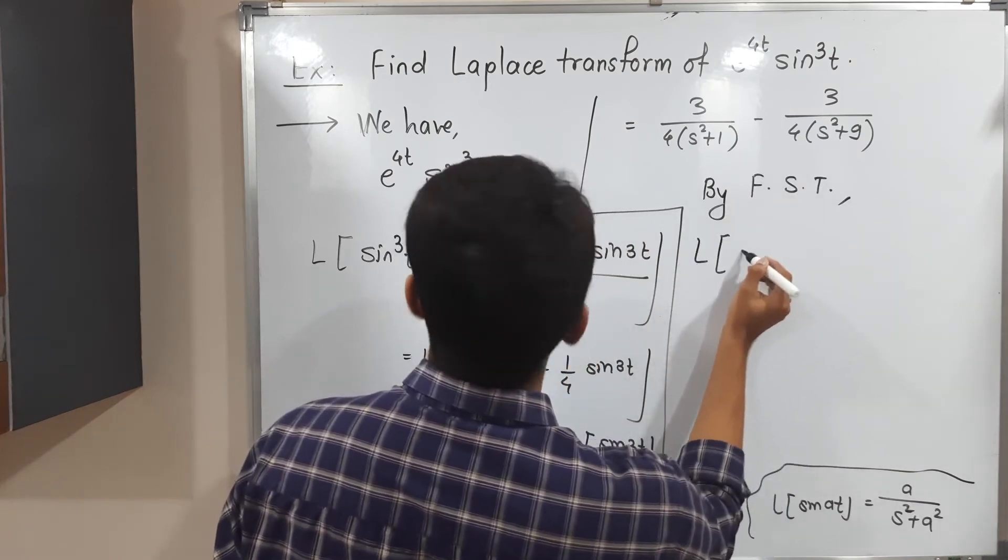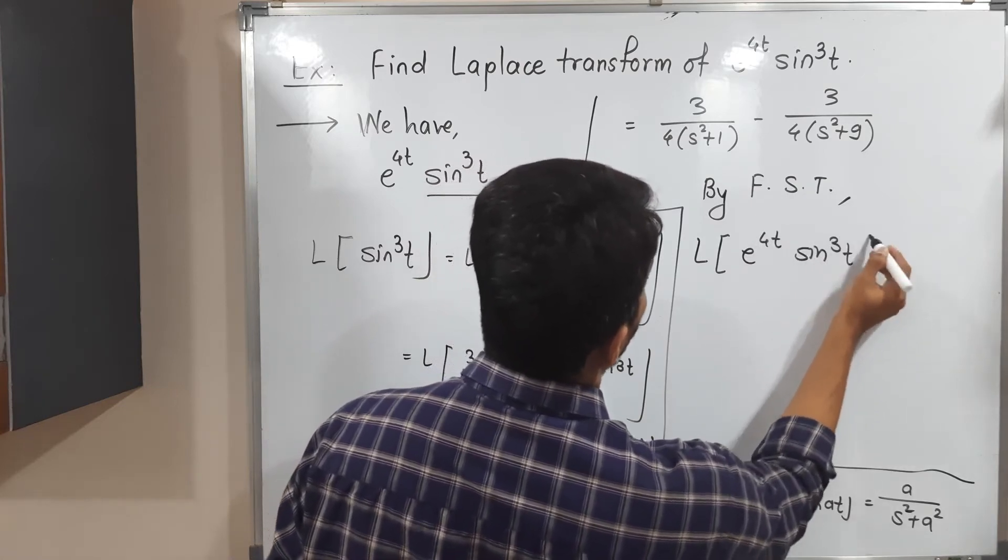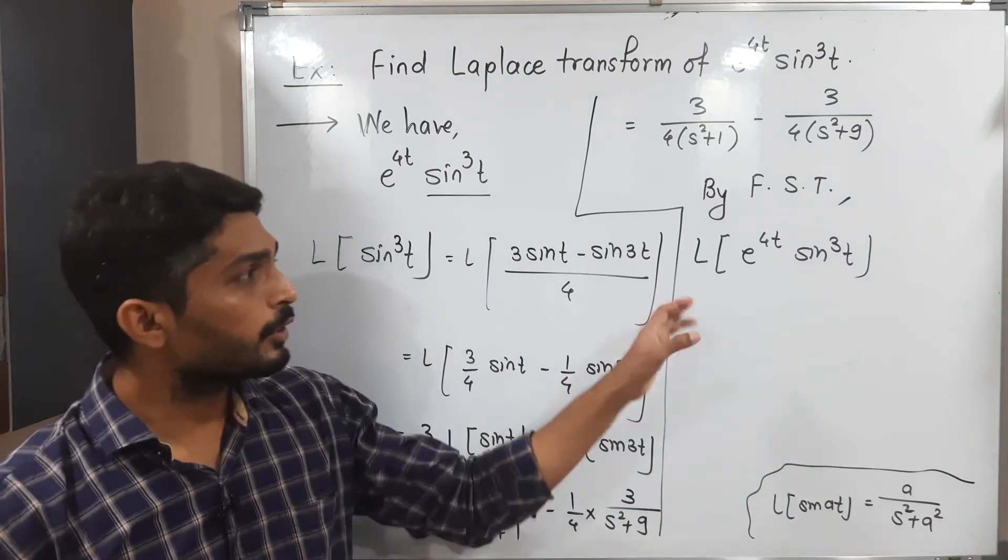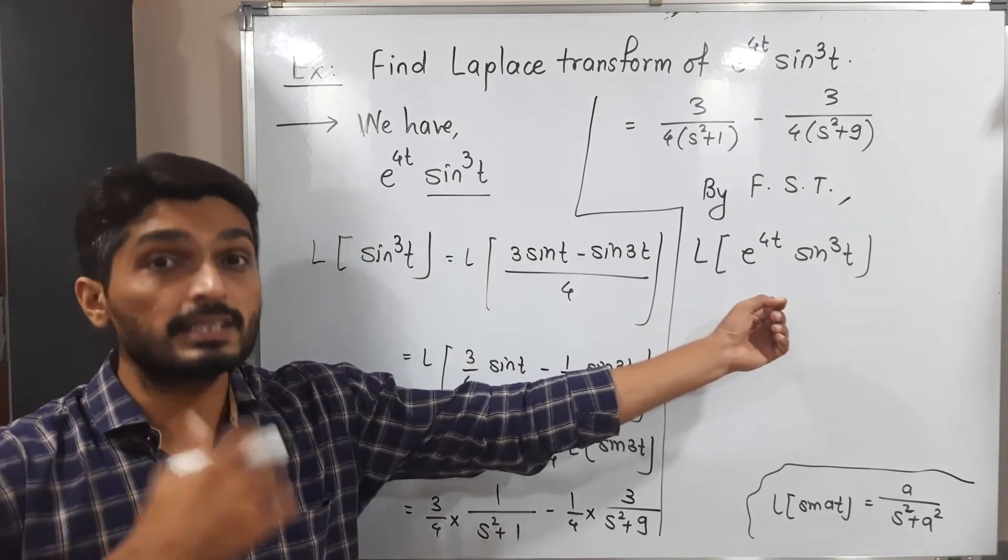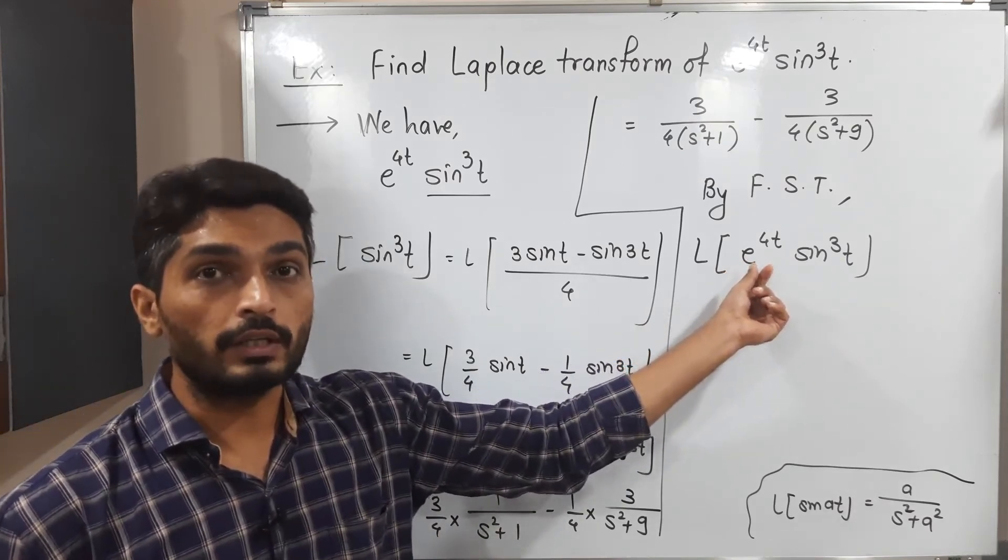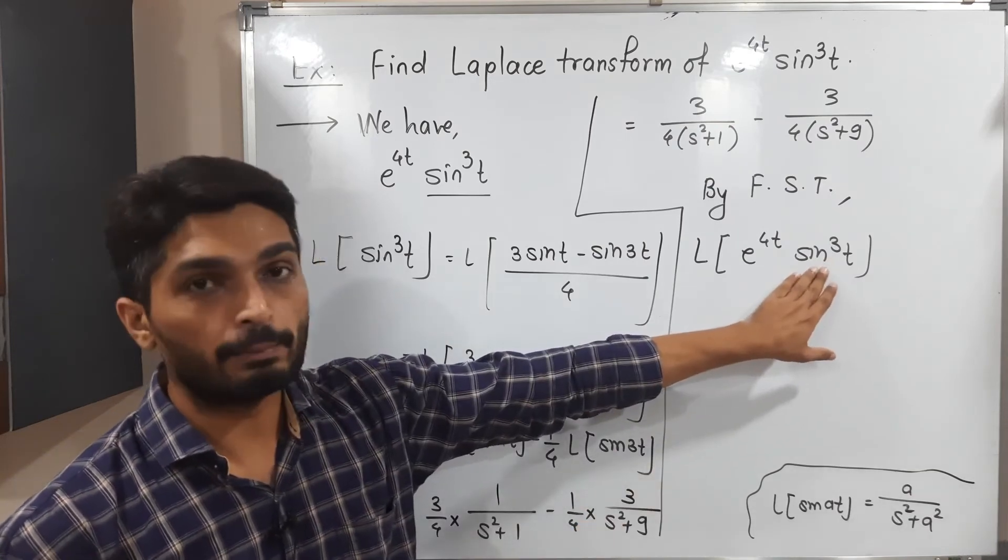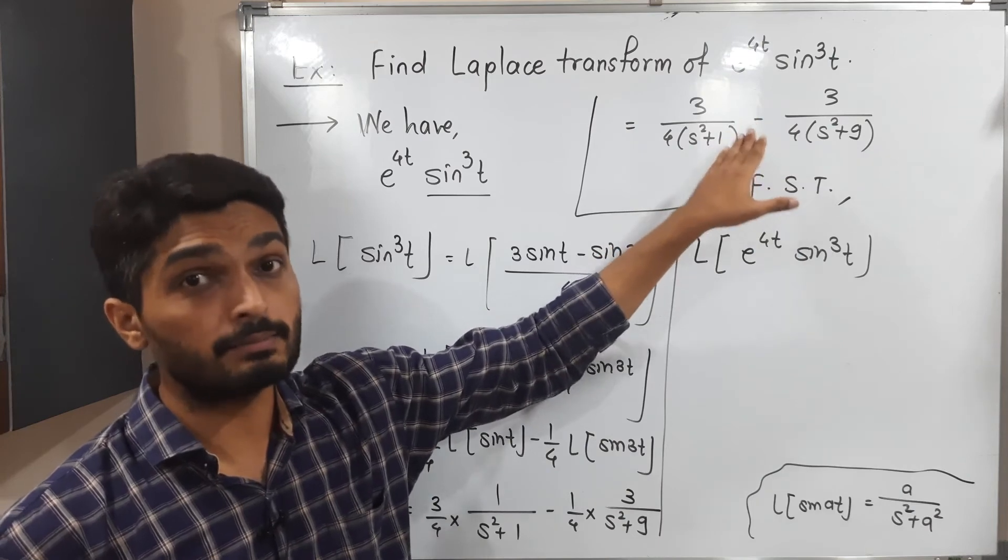So Laplace of e^(4t) sin^3(t). I have considered e^(4t). So as I told you earlier, it does not have its Laplace originally. It simply makes changes in the previous Laplace. That means because of e^(4t), it will make some changes only. Basically, we focus on the Laplace of sin cube t, which we already have.